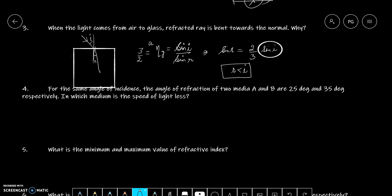Question number 4 says, for the same angle of incidence, the angle of refraction of two media A and B are 25 degrees and 35 degrees respectively. In which medium is the speed of light less? Question ke according, humain pata hai A and B.